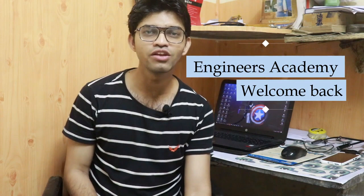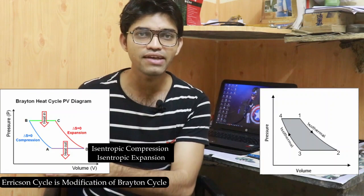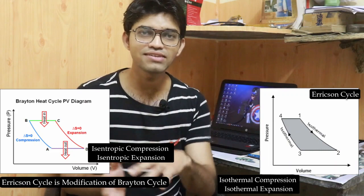Welcome back to Engineers Academy. In this video we are going to learn about the Ericsson cycle. This cycle was modified and introduced by John Ericsson in 1940, who made a heat engine working on this cycle and implemented it into the engine of a ship. The Ericsson cycle is a slight modification of the Brayton cycle — whereas the Brayton cycle uses isentropic compression and expansion, the Ericsson cycle uses isothermal compression and isothermal expansion.